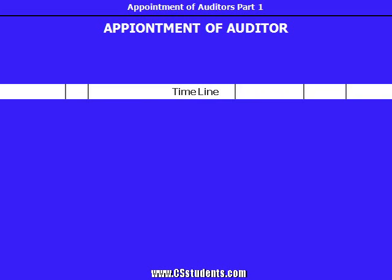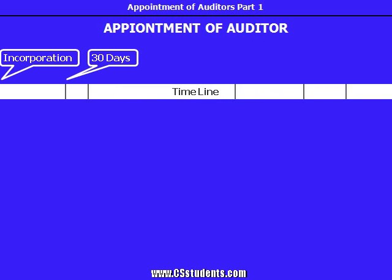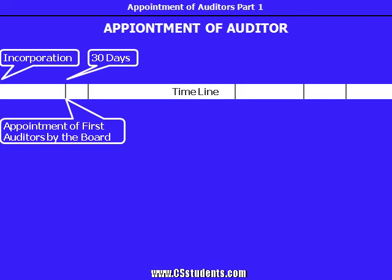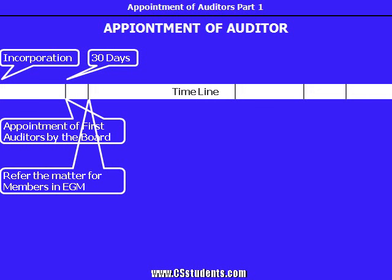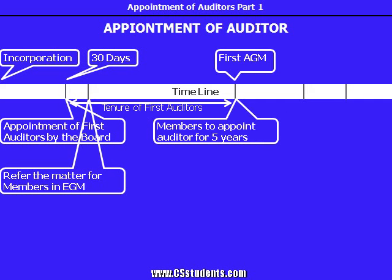The first appointment must take place within 30 days after the incorporation. This appointment shall be done by the board of directors. If the board fails to do so, they shall refer the appointment to be done by the members in an extraordinary general meeting. That first auditor shall hold the office upto the first annual general meeting of the company.